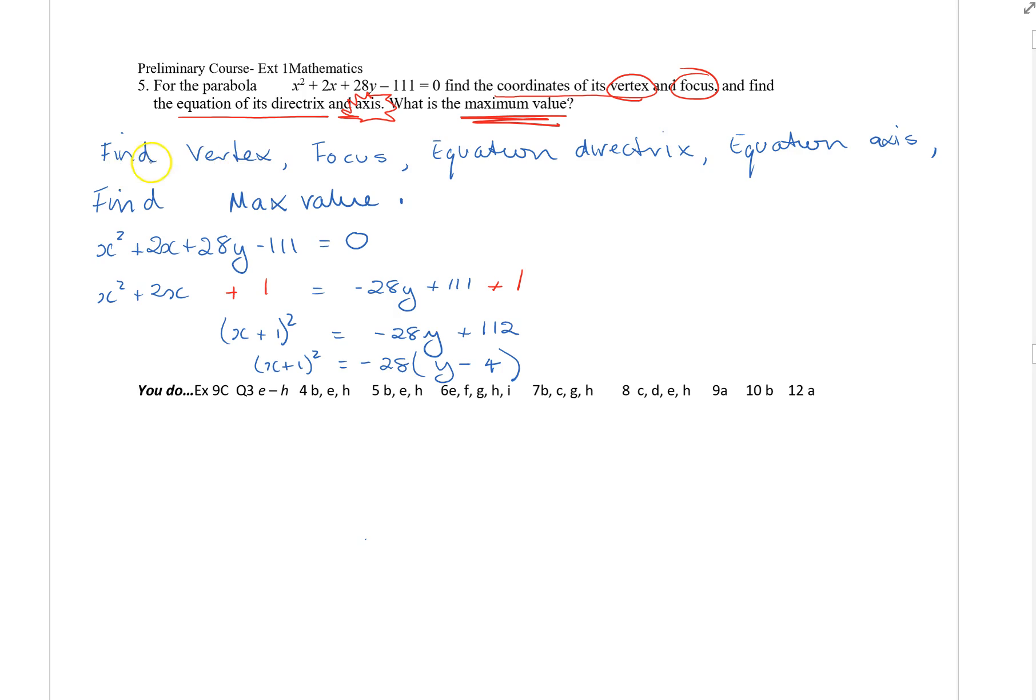I have started with: find the vertex, the focus, the equation of the directrix, equation of the axis, and find the maximum value. I think another advantage of actually making yourself write these down is you're more likely to ensure that you have answered every part, rather than just relying on this underlining. Sometimes the underlining is just not enough. Make yourself write it down. Having written it down, you might also be aware then that at the end you'll come back and you'll check these off and make sure that you have identified all of those and answered the entire question.